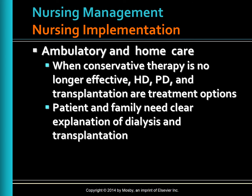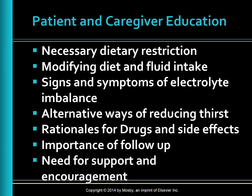Ambulatory and home care: when conservative therapy is no longer effective, hemodialysis, peritoneal dialysis, and transplantation are the treatment options. Patients and families need a clear explanation of dialysis and transplantation, and should be informed that if dialysis is chosen, transplantation is still an option. Patient and caregiver education includes necessary dietary restrictions related to protein, sodium, potassium, and phosphorus, as well as fluid restrictions. Patients on peritoneal dialysis are not on too many restrictions; protein intake is 1.2 grams per kilogram of ideal body weight. Ways to prevent protein energy malnutrition should be discussed, including hidden sodium and potassium in salt substitutes and convenience foods like TV dinners, which usually have high salt content.